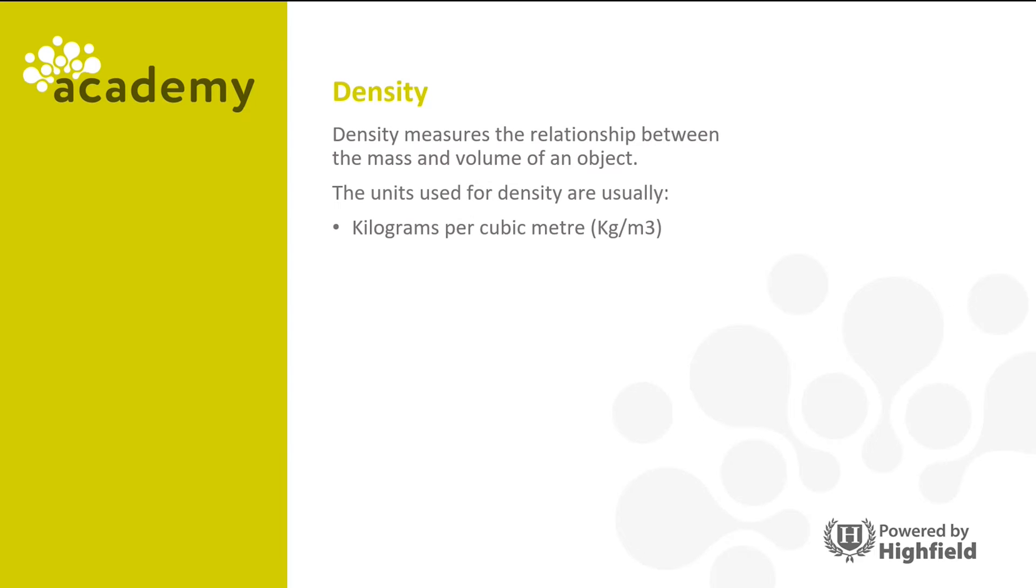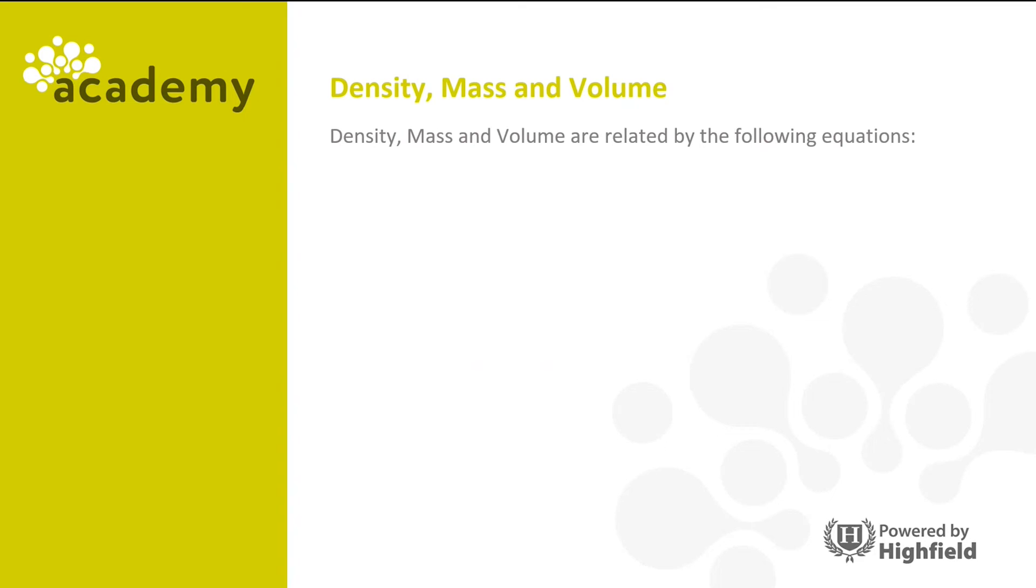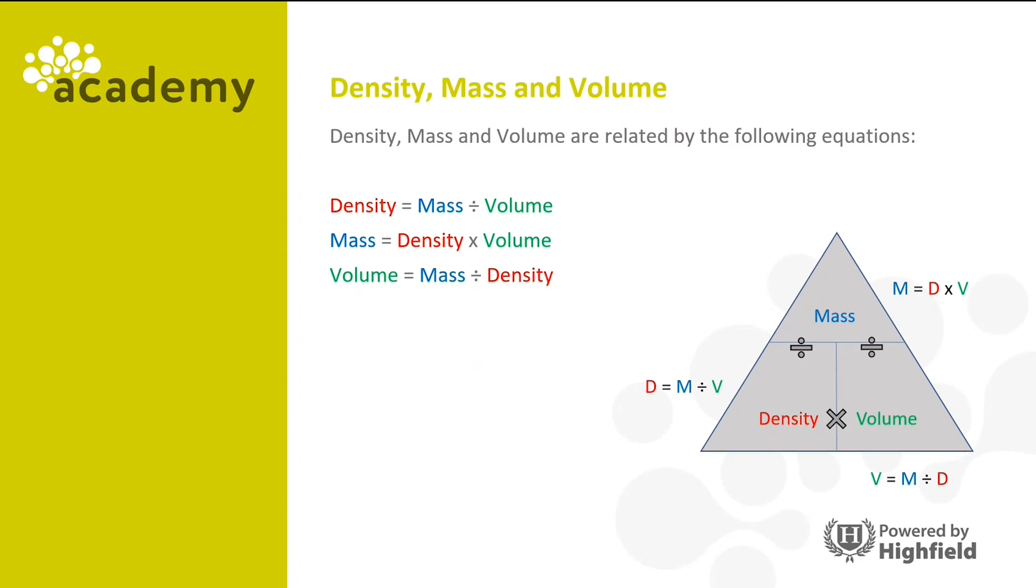Let's look at density now. Density measures the relationship between the mass and volume of an object. The units used for density are usually kilograms per cubic meter and grams per cubic centimeter. Density, mass and volume are all related by the following equations. Density equals mass divided by volume, mass equals density times volume, and volume equals mass divided by density. And if you look in this diagram, you can see quite clearly how they all relate to each other.